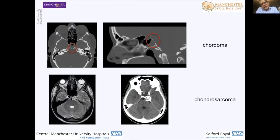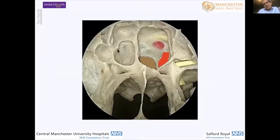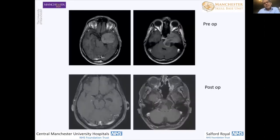But when you start to work out laterally — so behind paraclival and below petrous carotid artery, when you've drilled away the root of the pterygoid, when you've divided the Vidian nerve on one side and are really starting to work out to one side or the other — then you start to have to think about modified reconstruction techniques: larger flaps augmented with other layers to help you seal off any potential CSF fistula.